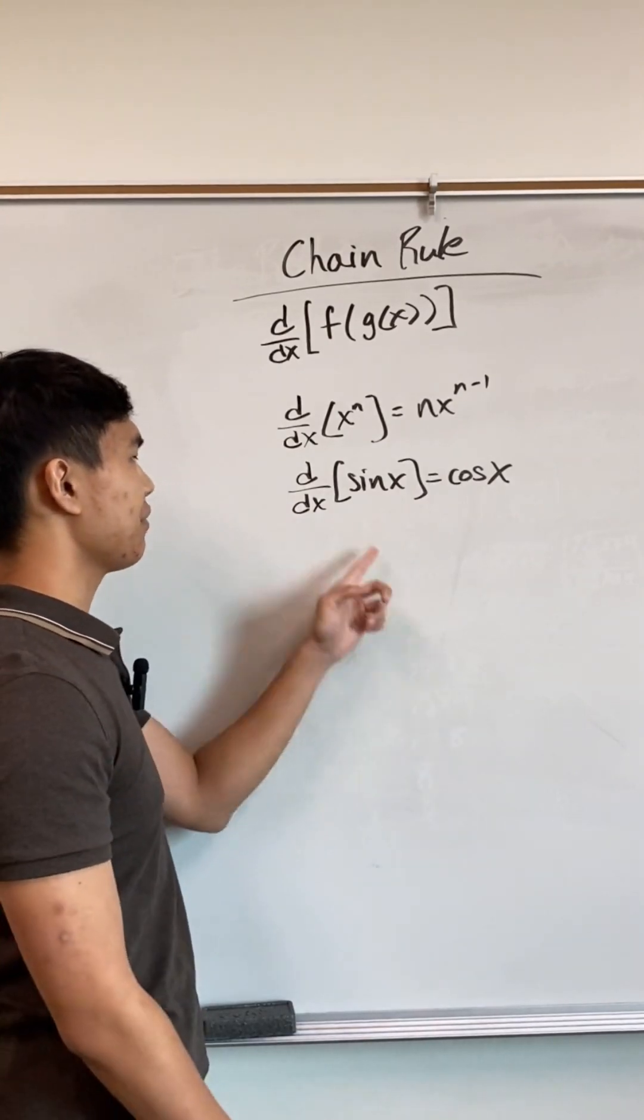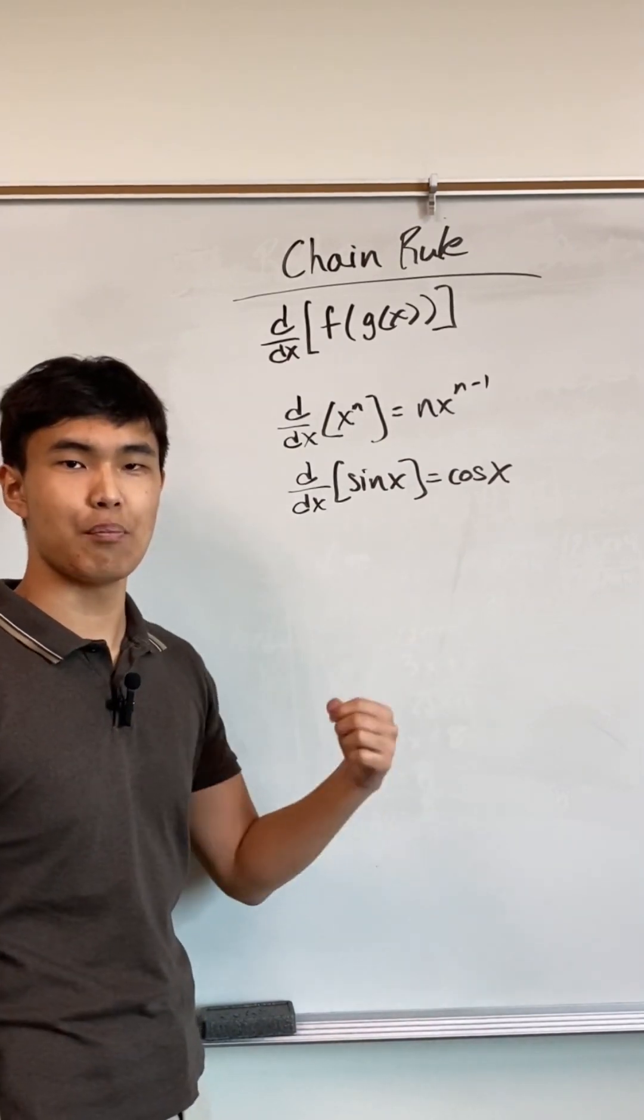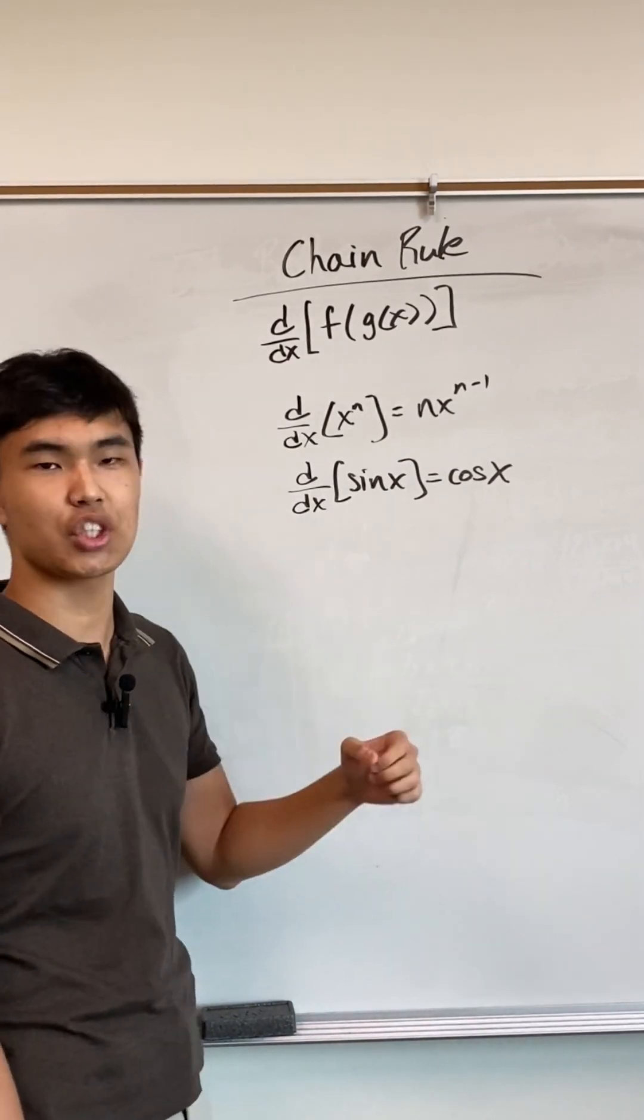For example, we can find the derivative of sine of x in one step. We know it's cosine of x. But if I was trying to take the derivative of sine of (x plus one), that's impossible to do in one step because that's sine of a function, not sine of an entity.